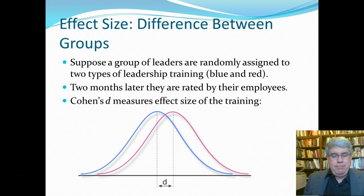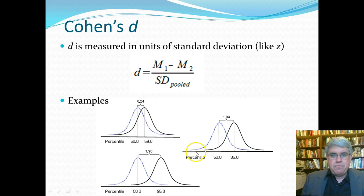Now what exactly does d mean? This is kind of non-intuitive. Well, d is measured in units of standard deviation like z is. So we basically take whatever the first mean is, we subtract the second mean from it, and then we get it to a standardized unit by dividing by the pooled standard deviation of both samples.